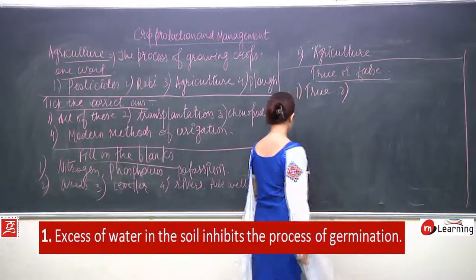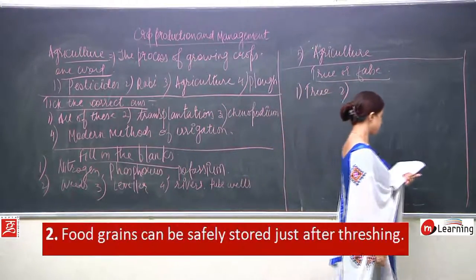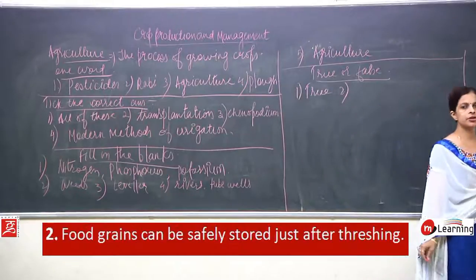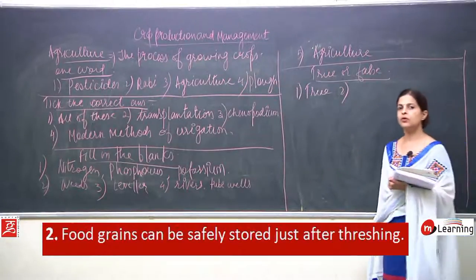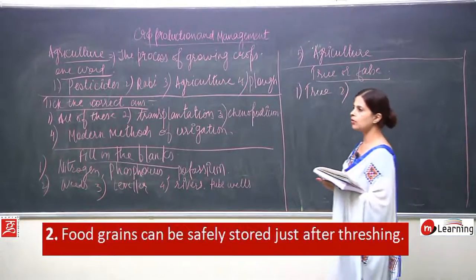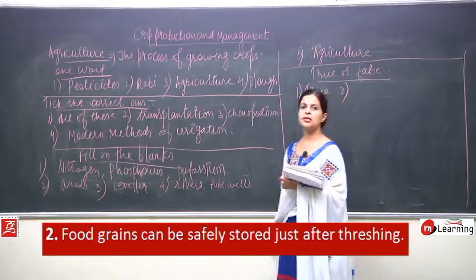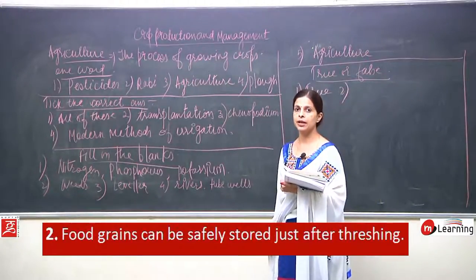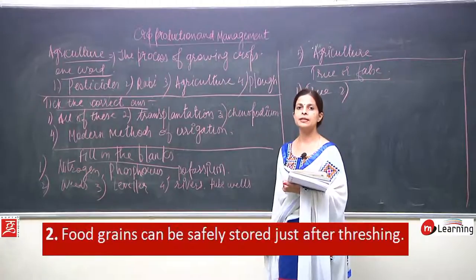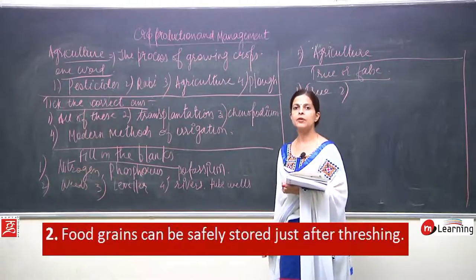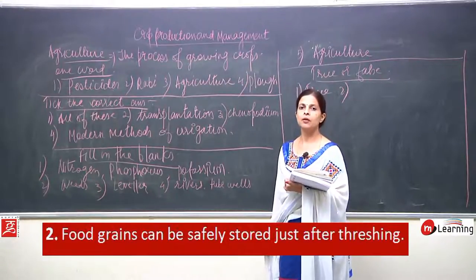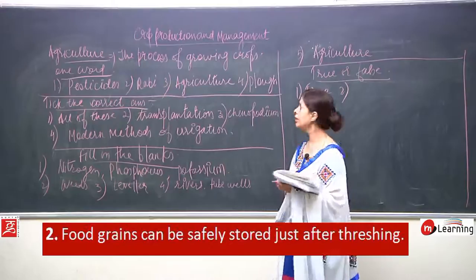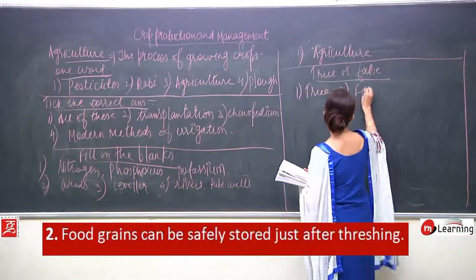B: food grains can be safely stored just after threshing — false. After threshing, many things have to be done: winnowing is done, then sun drying, and only then storage.